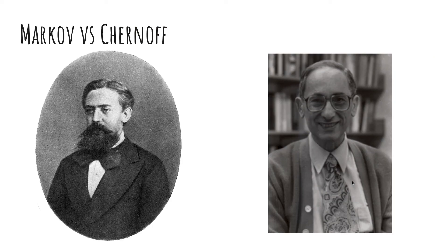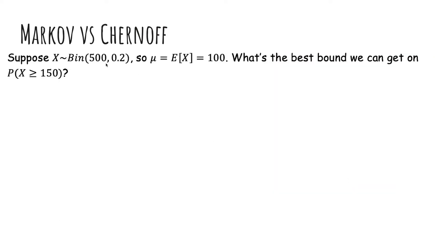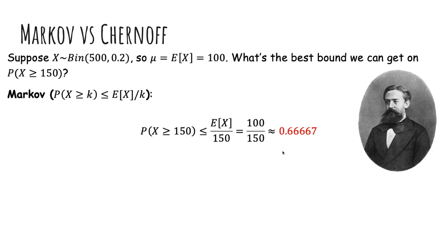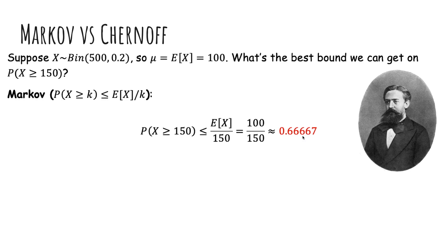So let's compare Markov and Chernoff bounds. So suppose x is binomial 500, 0.2, and so the mean is 100. What's the best bound we can get for the probability x is at least 150? If you use Markov's inequality, you get E of x over 150 or 2 thirds, which is not great. And if you use Chernoff bounds, you actually get 0.00024. And this is, again, a really tight bound because it's exponentially small, and we were optimizing over a ton of t. So we actually use Markov to prove Chernoff.